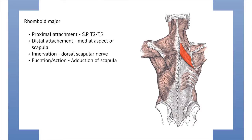And the rhomboid major. Its proximal attachment is the spinous process of T2 to T5, and its distal attachment is the medial aspect of the scapula. It's innervated by the dorsal scapular nerve. Its functional action is to adduct the scapula.